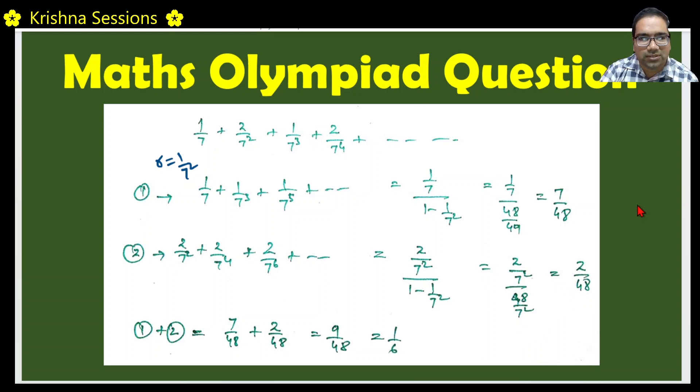So the first, third, fifth terms they are giving a sum of 7 by 48. Second, fourth, sixth, etc. they are giving a sum of 2 by 48. So what is the total sum? 7 by 48 plus 2 by 48 is 9 by 48 is equal to 1 by 16.